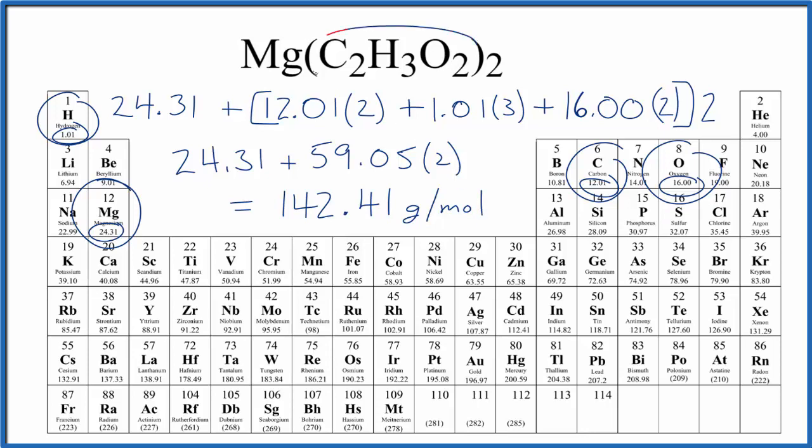So the molar mass for magnesium acetate is 142.41 grams per mole. Note that my periodic table rounds to two decimal places. If your periodic table rounds to a different number, you might get a slightly different answer.